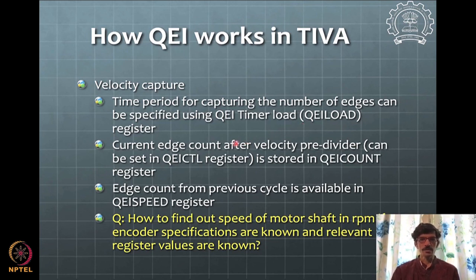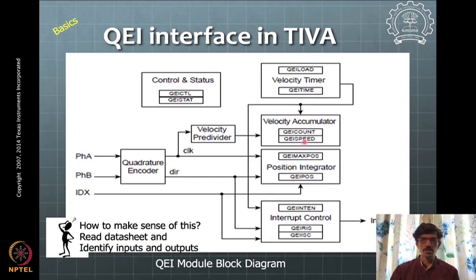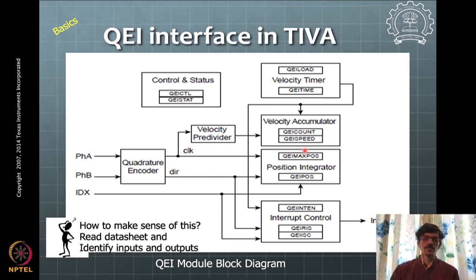The velocity count pre-division can be set in the QICTL register. The current count value is available in the QEI count register, and once the timer expires that value is transferred to the QEI speed register, where it remains available until the next timer reset. You read the current speed from the QEI speed register and set the timer value based on how frequently you want to update speed.